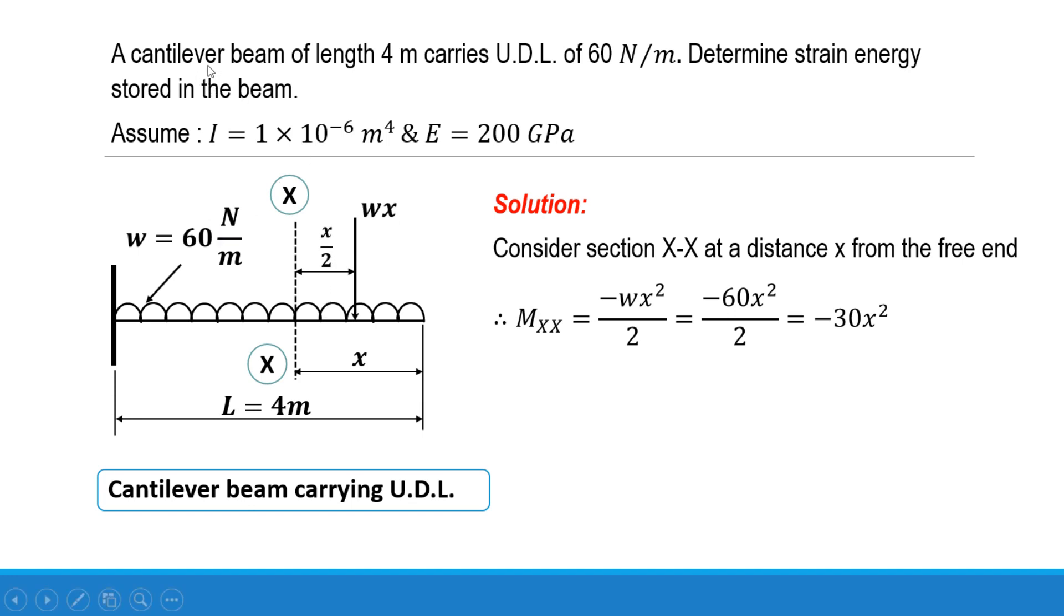The problem statement is: a cantilever beam of length 4 meters carries uniformly distributed load of 60 N per meter and we have to find out the strain energy stored in the beam. Moment of inertia is given as I = 1 × 10^-6 m^4 and modulus of elasticity is given as E = 200 GPa, that is 200 × 10^3 MPa.